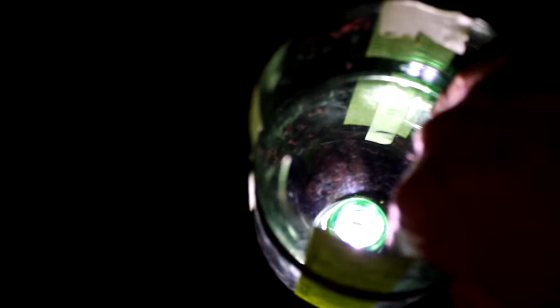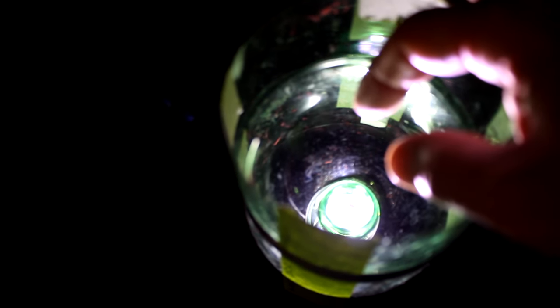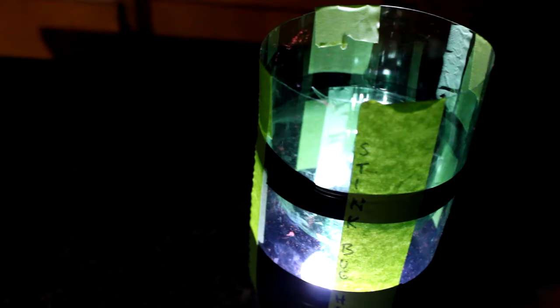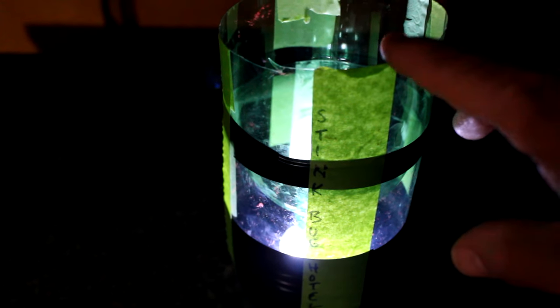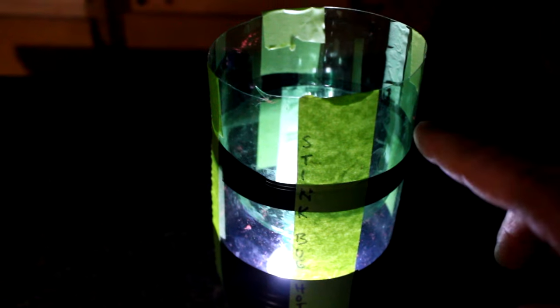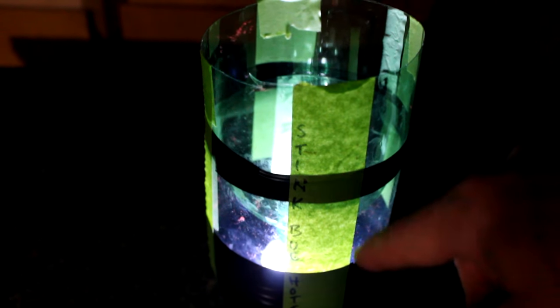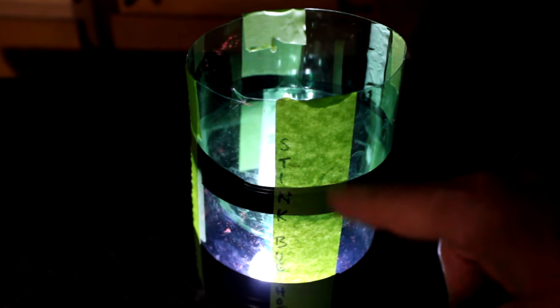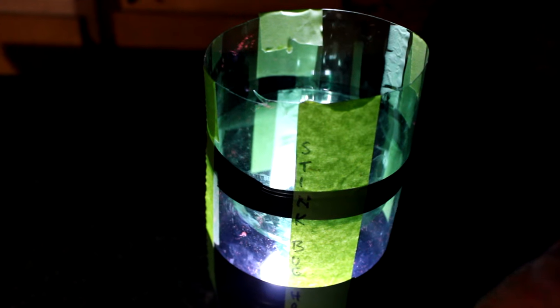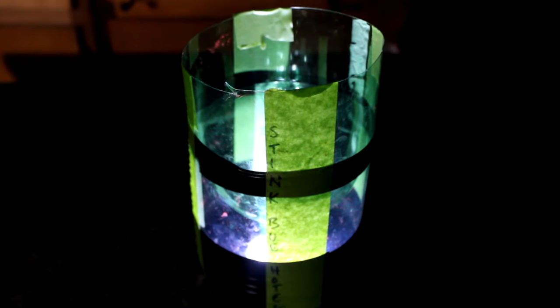The whole premise is the bugs will crawl in, go down toward the light, fall through the hole, and then they won't be able to get back out. They're going to crawl up the side and it's just going to make it very difficult. I think if I was to do it over again I might cut off just the top fourth because it did reach down pretty far. But I still think they're going to have a real hard time crawling up that slick surface on the plastic.